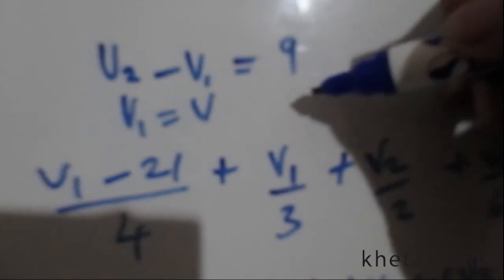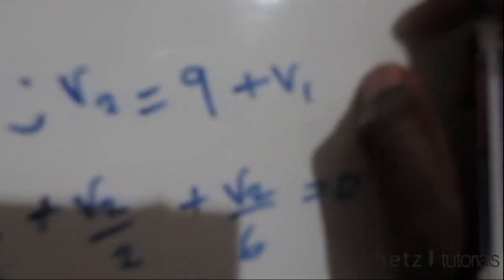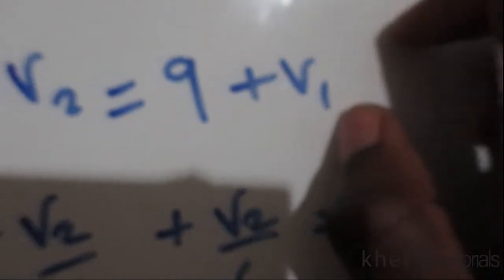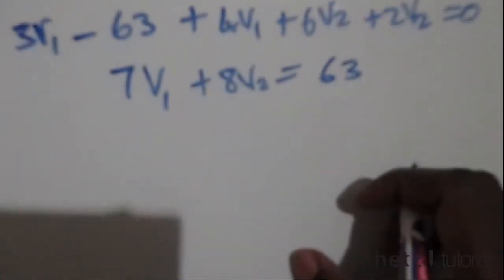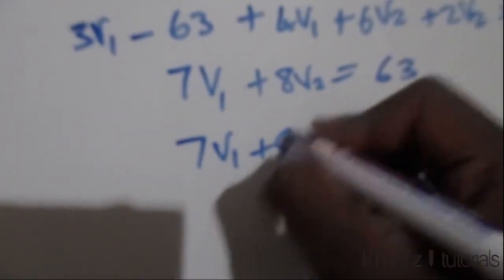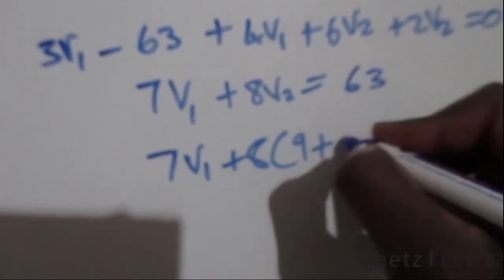We know that v2 minus v1 equals 9 from earlier, so we can manipulate that to be v2 equals 9 plus v1. Substitute this v2 wherever we see v2 here. It's going to be 7v1 plus 8 multiplied by 9 plus v1 equals 63.